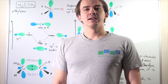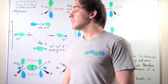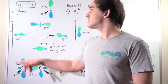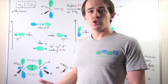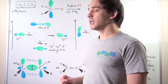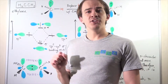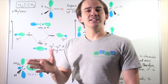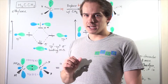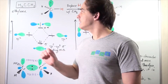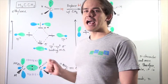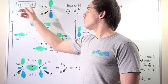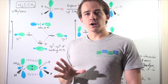Let's begin by looking at the simplest alkene, known as ethene, also known as ethylene. Ethylene is composed of two carbons connected by a double bond, and two H atoms found on both sides of those carbons.